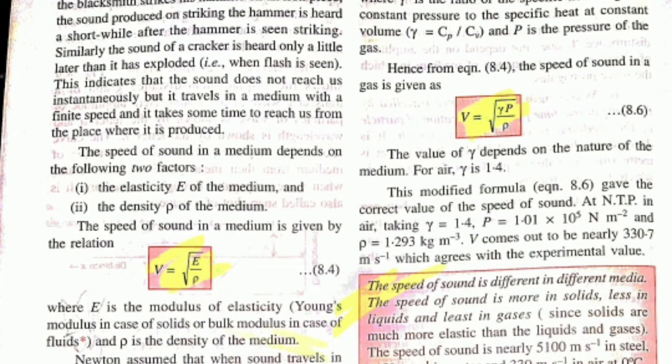Next topic: speed of sound in different media. Always remember that the speed of sound in a medium depends on two things: elasticity of the medium and density. The relationship is v = √(E/ρ), where E is elasticity and ρ is density. If asked: state two properties of the medium on which speed of sound depends — the answer is elasticity and density.